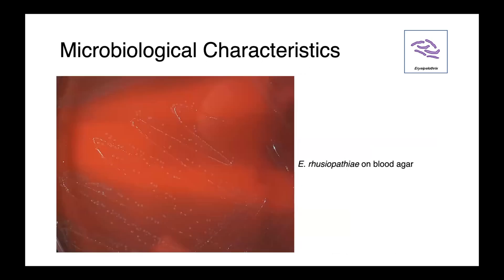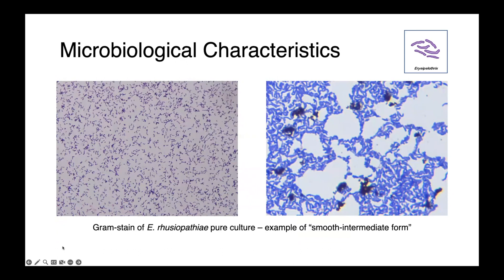This is a pure culture of Erysipelothrix rhusiopathiae on blood agar, and you can see these small, creamy, slightly yellow colonies here in the fourth streak. We have some gram stains of a pure culture, and I think this would be an example of a smooth intermediate form — it's sort of somewhere in the middle. The cells do have these kinks in them, but they're not quite as irregular as they could be.